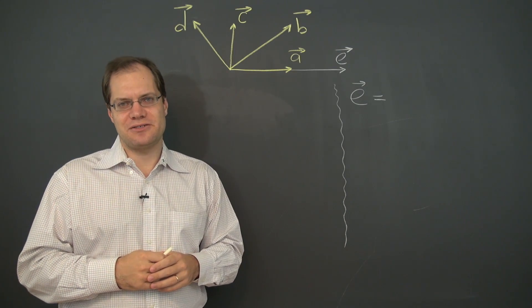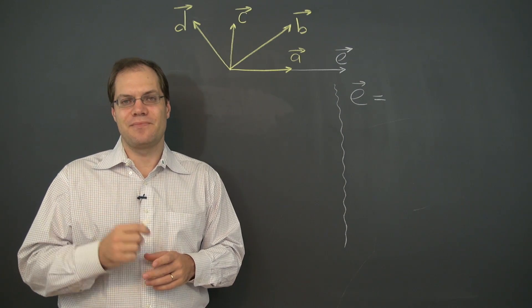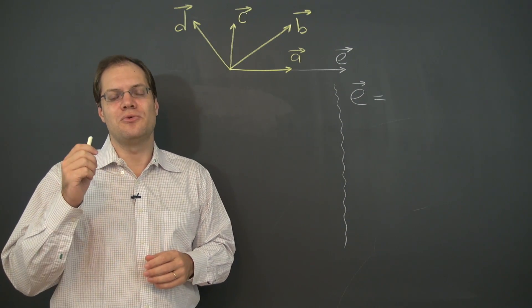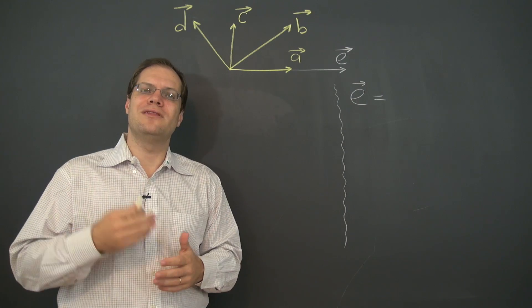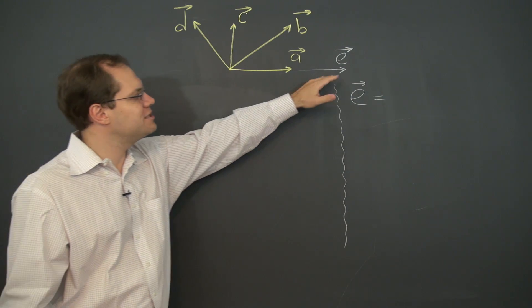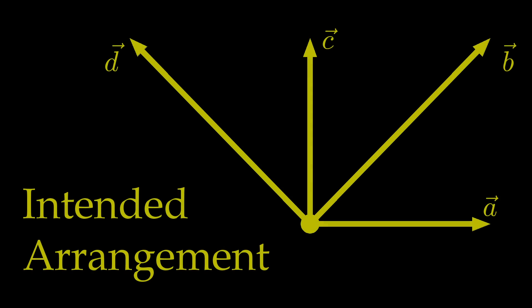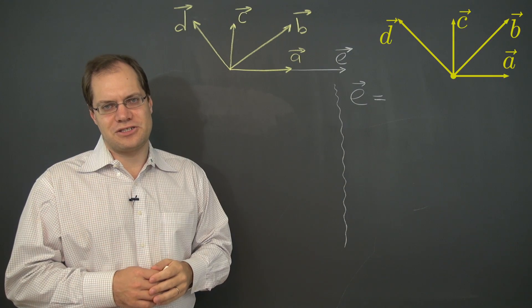Alright, one more example with geometric vectors to illustrate one more important point. This discussion will remain a little bit open and will leave you with something to think about. Once again, let our goal be to decompose E as a linear combination of A, B, C and D in all possible ways.